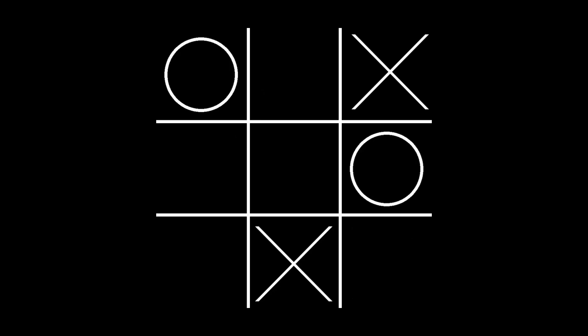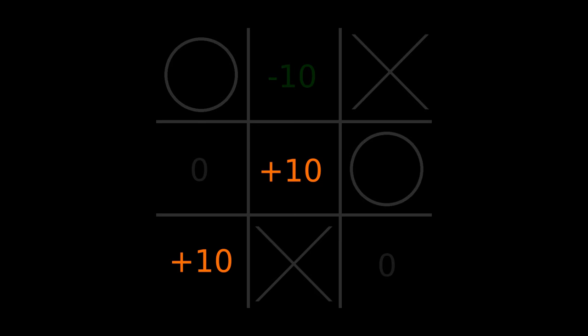A minimax algorithm therefore assigns these scores to the different choices. The optimal play is either center or corner, but neither is inherently better. There isn't one right move.